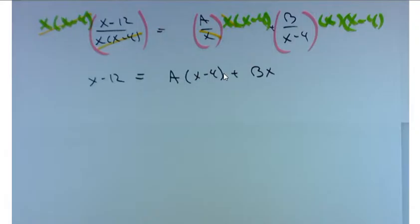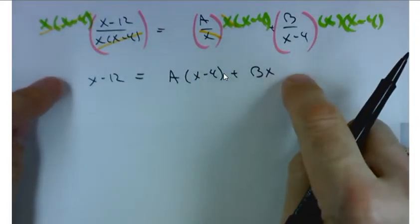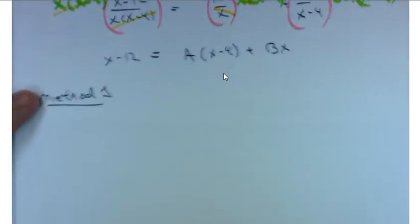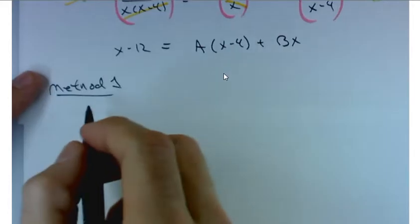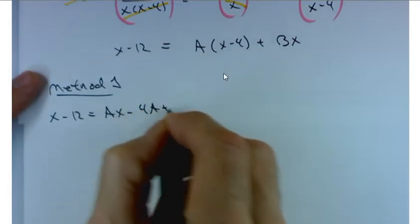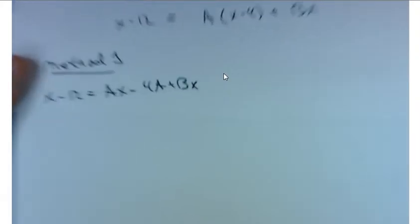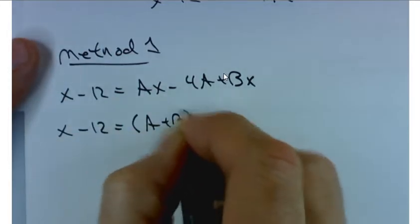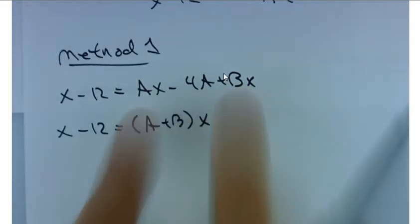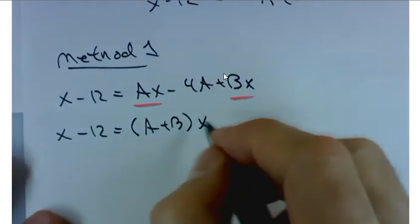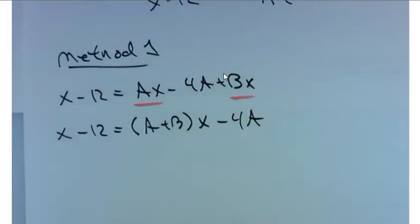Now there's two ways to solve this problem. And they both start from here. Let me show you the first way. Method one. The first way, which you kind of have to know because you can't always use the second method, we're going to distribute this. And I'll get Ax minus 4 times A plus Bx. And now I'm going to pull the x terms together. So if I take these two together and factor out the x, I've got A plus B times x minus 4A. And you might be wondering, well where is this going? How is that helping us out?